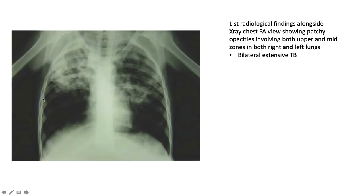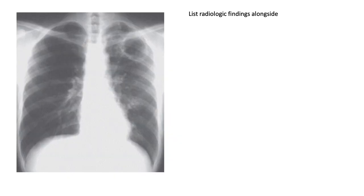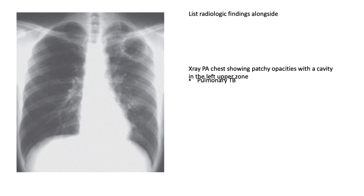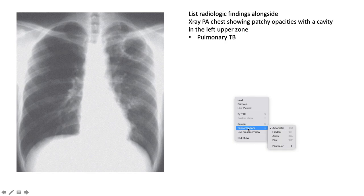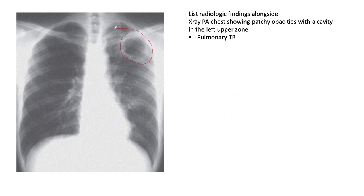This PA film shows patchy opacities in both upper and mid zones bilaterally — bilateral extensive TB. One radiological finding here is a beautiful cavity in the left upper zone. This signifies active, open TB, which is highly contagious, and you want to start the patient on TB treatment as soon as possible.